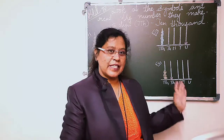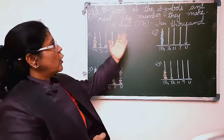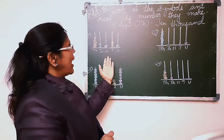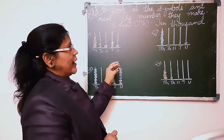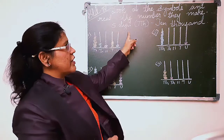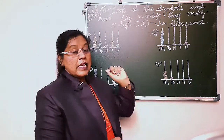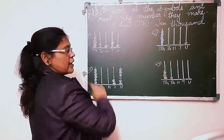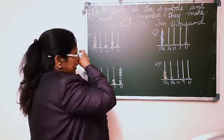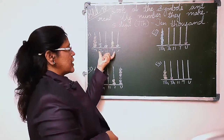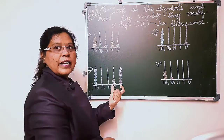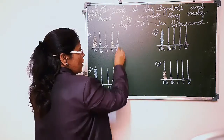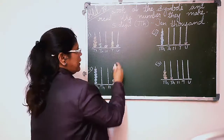Now you can see on the blackboard — look at the symbols and read the numbers they make. You have to look at these symbols and read them in numbers and figures. This is a five digit number. Five digit numbers start from ten thousand. Now we'll start with the first one. On the spike of the abacus, beads are there representing numbers. On the units place, how many beads are there? It is one.